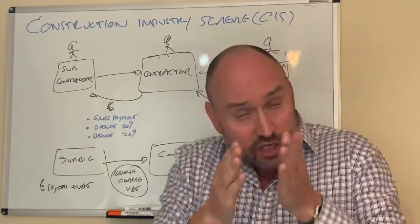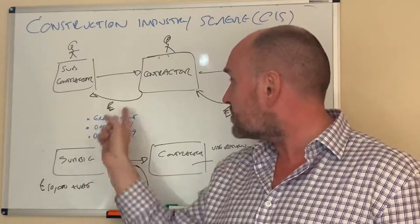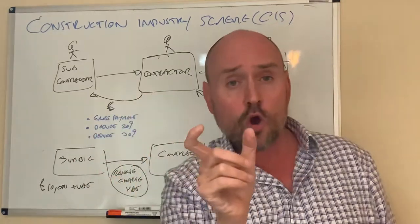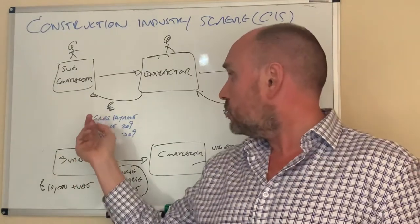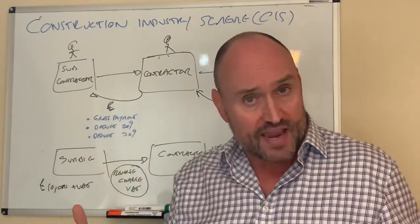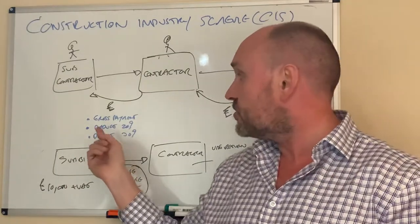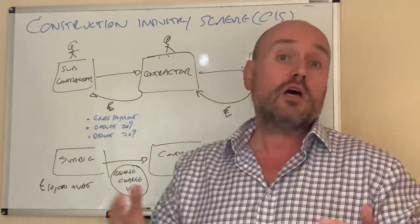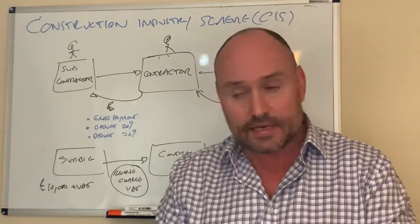Now, when the guy becomes CIS registered, and he doesn't have gross payment status, then this guy, the contractor, withholds 20%. So, not large enough to warrant to be paid gross, but he is registered under CIS, then deduct 20%. And then, at the end of the year, he's all square because he would have paid 20% in any case.